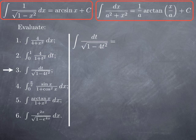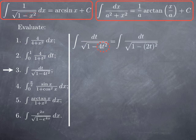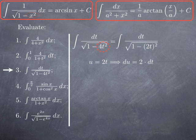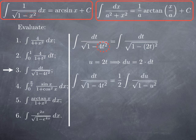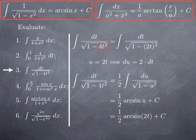The third integral is the integral of dt over square root of 1 minus 4t squared. It looks like the form 1 over square root of 1 minus x squared, but we need 1 minus the square of the variable. Here we have 1 minus 4t squared, which we write as 1 minus (2t) squared. That suggests the substitution u = 2t, so du = 2·dt, meaning dt = (1/2)·du. Substituting, we get 1/2 times the integral of du over square root of 1 minus u squared. Using the arcsin formula, we obtain 1/2·arcsin(u) plus C, and substituting back: 1/2·arcsin(2t) plus a constant.